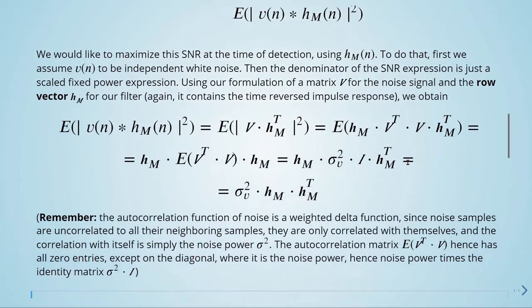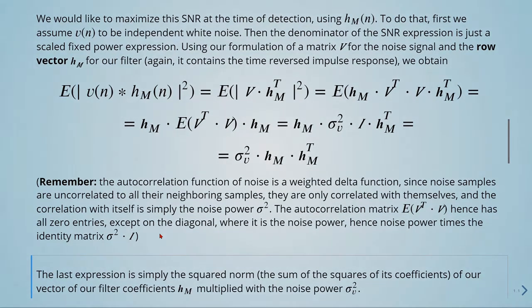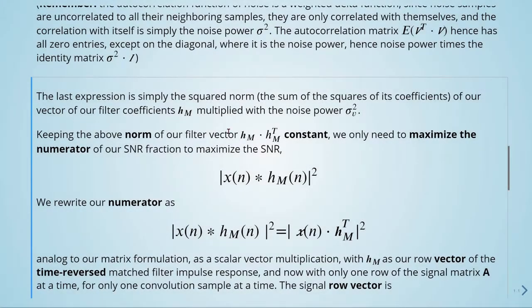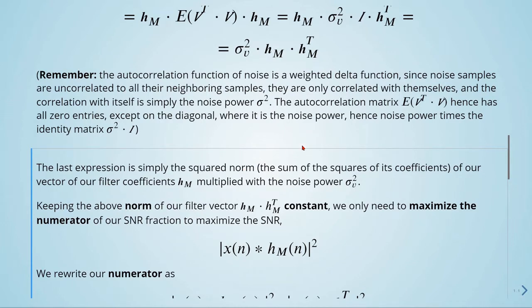Remember that the autocorrelation function of noise is a weighted delta function, since noise samples are uncorrelated to all their neighboring samples and they are only correlated with themselves, and the correlation with itself is simply the noise power. So the autocorrelation matrix E, V transpose times V, has all zero entries except on the diagonal where is the noise power, so the noise power times the identity matrix. The last expression is simply the squared norm, the sum of the squares of its coefficients of our vector of our filter coefficients H_M multiplied with the noise power.